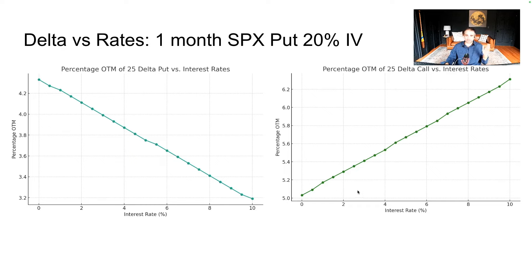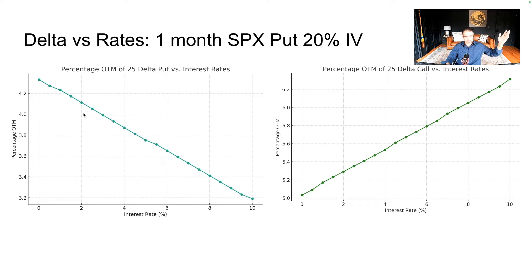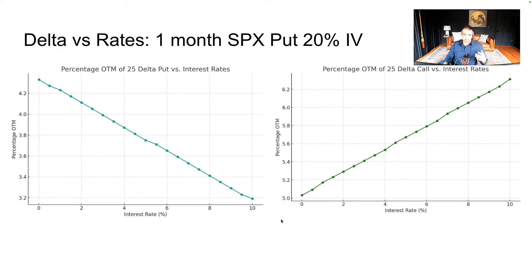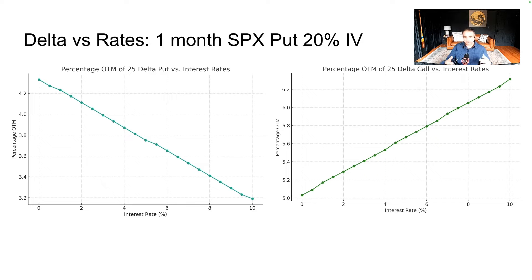Higher interest rates push call values up — if you measure where a 25 delta is relative to interest rates, the higher rates go, the higher the strike you have to go to sell a 20 or 25 delta call. This matters for these options funds, many of which are selling roughly a 20 delta call — they're selling at higher strikes. On the put side, as you raise rates, the delta of those puts shifts down. This changes the dynamics of how options are priced, which is critical when looking at skew charts. It's a higher-order concept but important when doing this analysis in these higher rate environments.